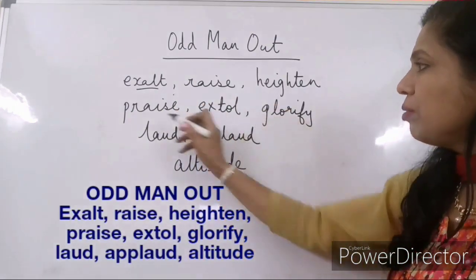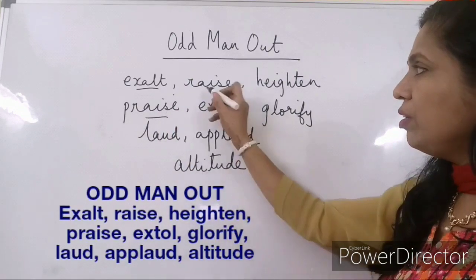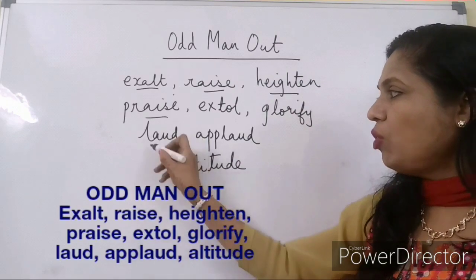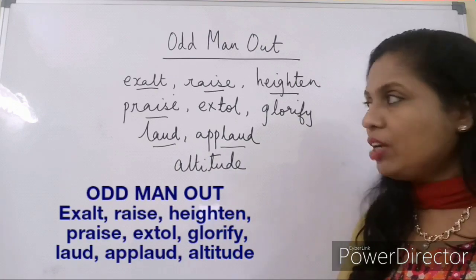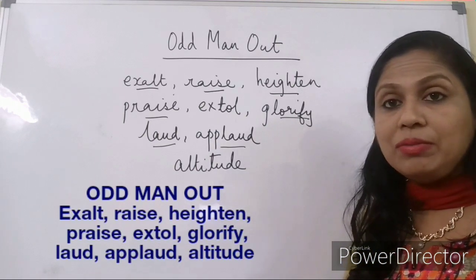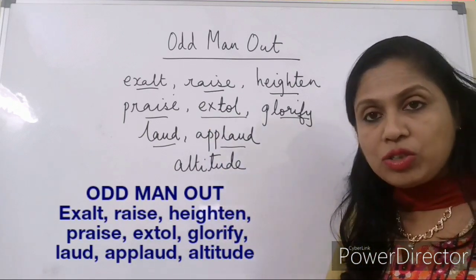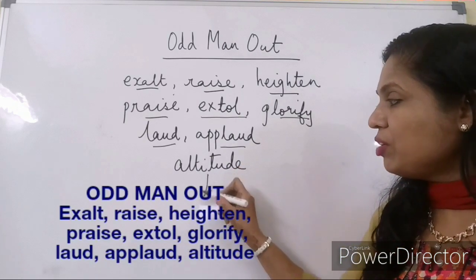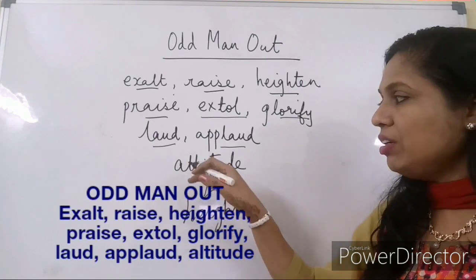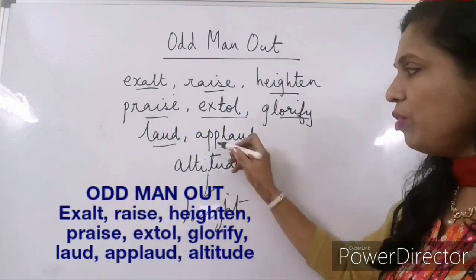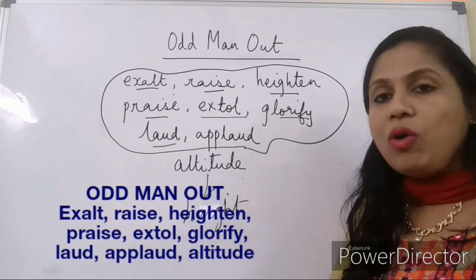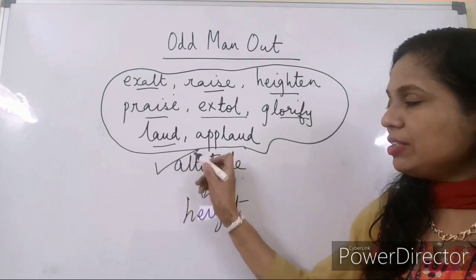Exalt and praise are synonymous. Raise or heighten also mean the same thing. Laud or applaud means to appreciate or to praise — again synonymous. Glorify also means the same thing. Extol also means to praise. But the word altitude means height, and there is no similarity between this word and the others. Therefore, all the other words are synonymous, but altitude is the odd man out — it is the answer.